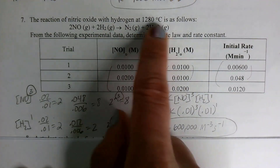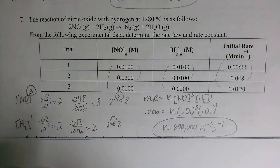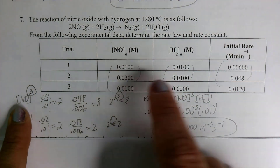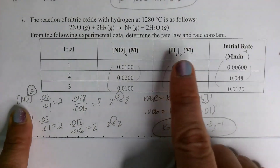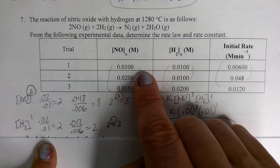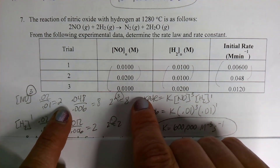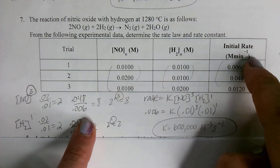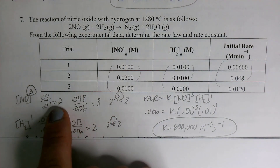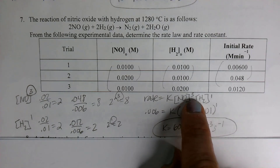Moving on to number 7. Another reaction with experimental data to determine the rate law and rate constant. Looking at NO first, I needed H₂ to stay the same — that's trials 1 and 2. When I divided trial 2 concentration by trial 1, NO concentration doubled. The rate went up by 8. Since 2 raised to the 3rd power equals 8, NO must be 3rd order.